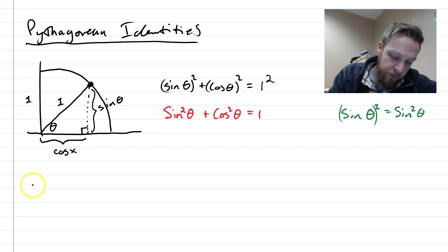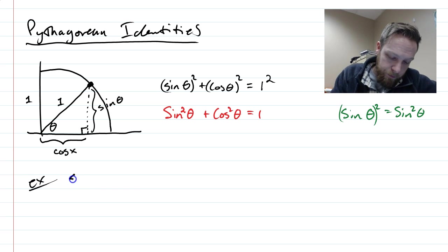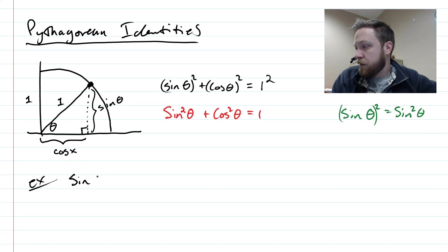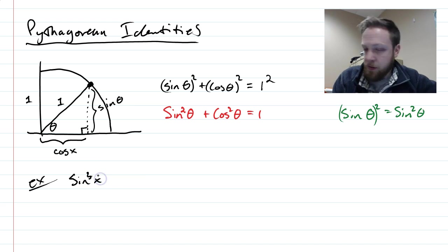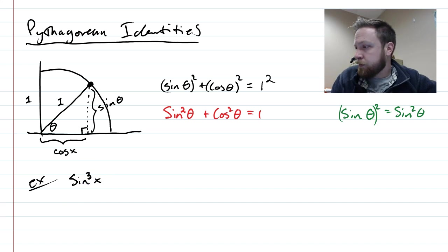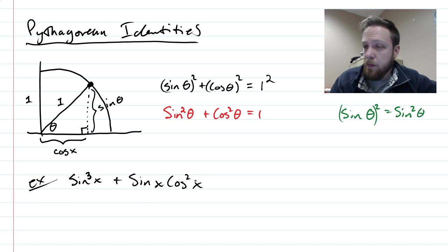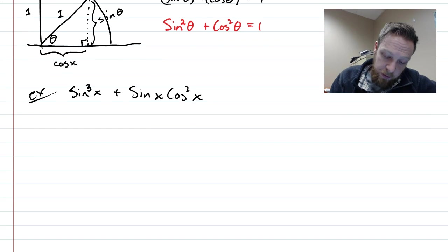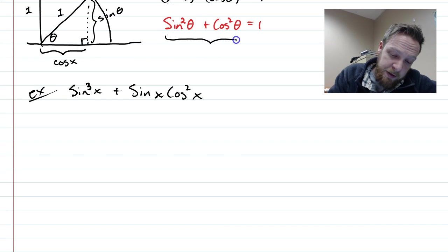So for an example of where you would see this: sin³ x + sin x cos² x. So they give you this, and their command would be to just simplify. So I'm looking for this, basically, in this example.